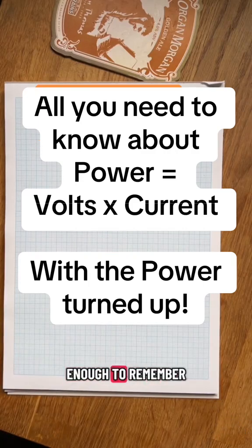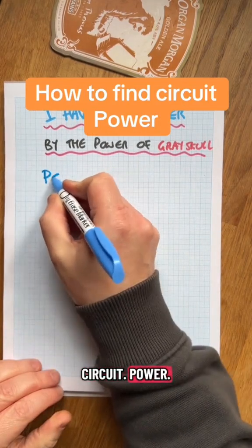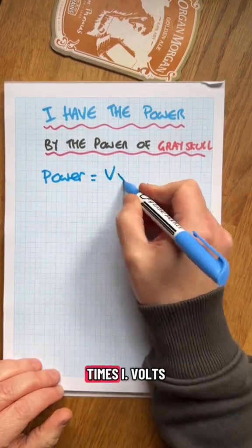I have the power! By the power of Grayskull - if you remember Thundercats, we're going to do power in the circuit. We can find the power in the circuit, it's just V times I, volts times amps.